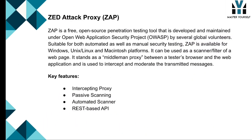ZAP — Z-Attack Proxy — is a free open-source penetration testing tool developed and maintained under the Open Web Application Security Project by several global volunteers. It is suitable for both automated as well as manual security testing. ZAP is available for Windows, Unix, Linux, and Macintosh platforms. It can be used as a scanner or filter of a webpage, standing as a middleman proxy between a tester's browser and the web application to intercept and moderate transmitted messages. Its key features are intercepting proxy, passive scanning, automated scanner, and REST-based API.